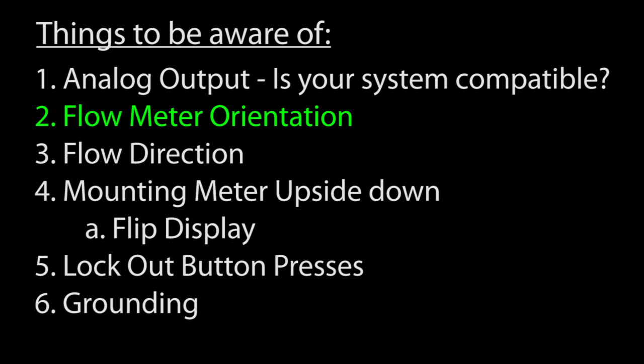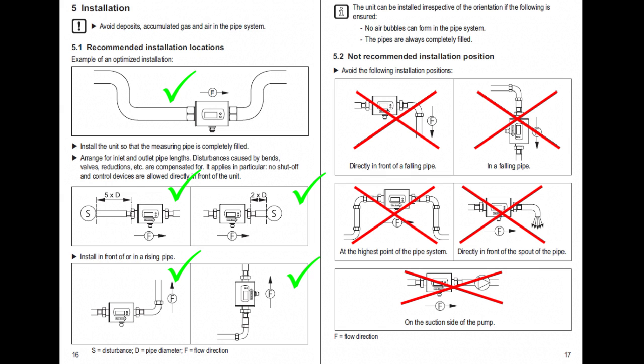Orientation of the flowmeter is very important. There are a bunch of diagrams in the user manual like this to show you the proper orientation, but the bottom line is you need a solid stream of liquid with no air pockets to get accurate results.